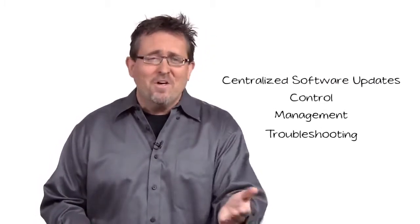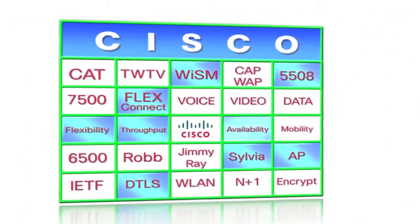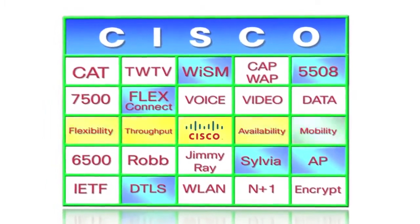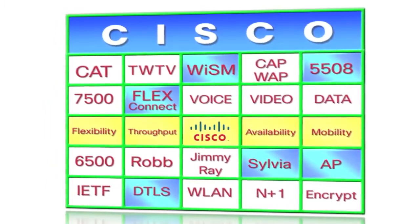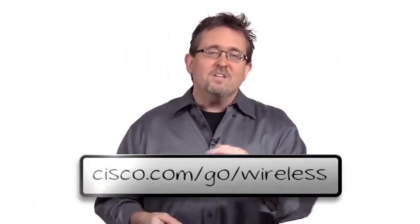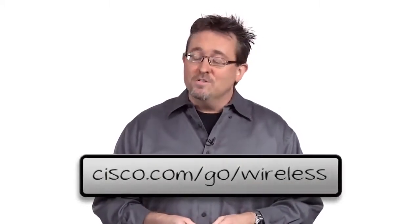Did you see it? It was all there. Flexibility, throughput, availability, mobility. That is how wireless is done these days. Hey, you ready for more? Check out cisco.com slash go slash wireless.